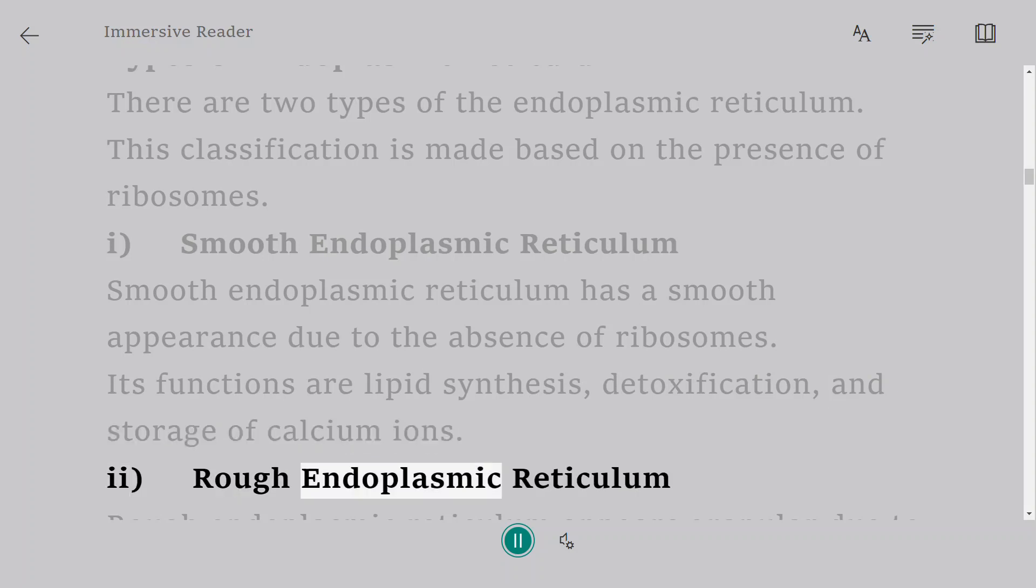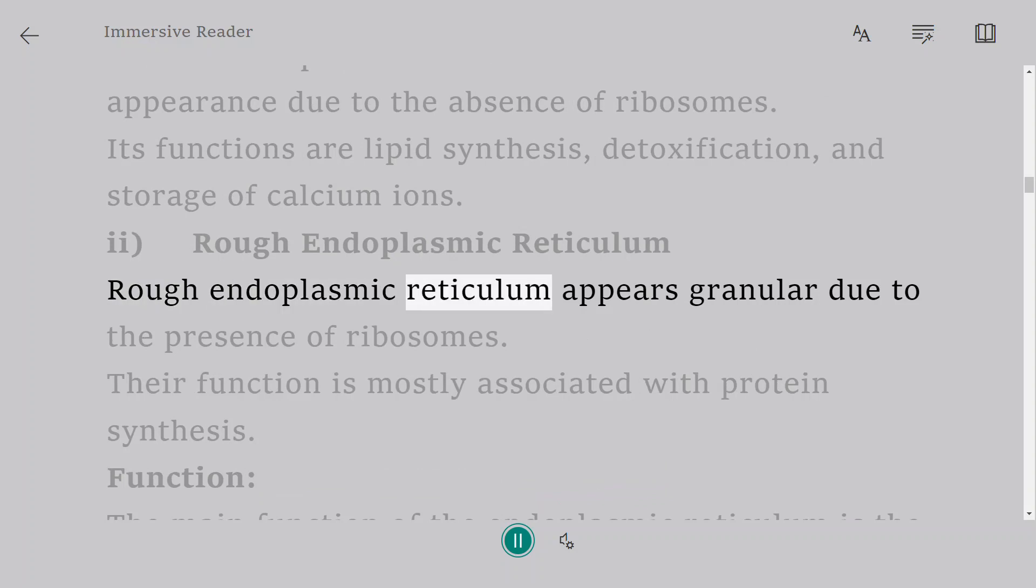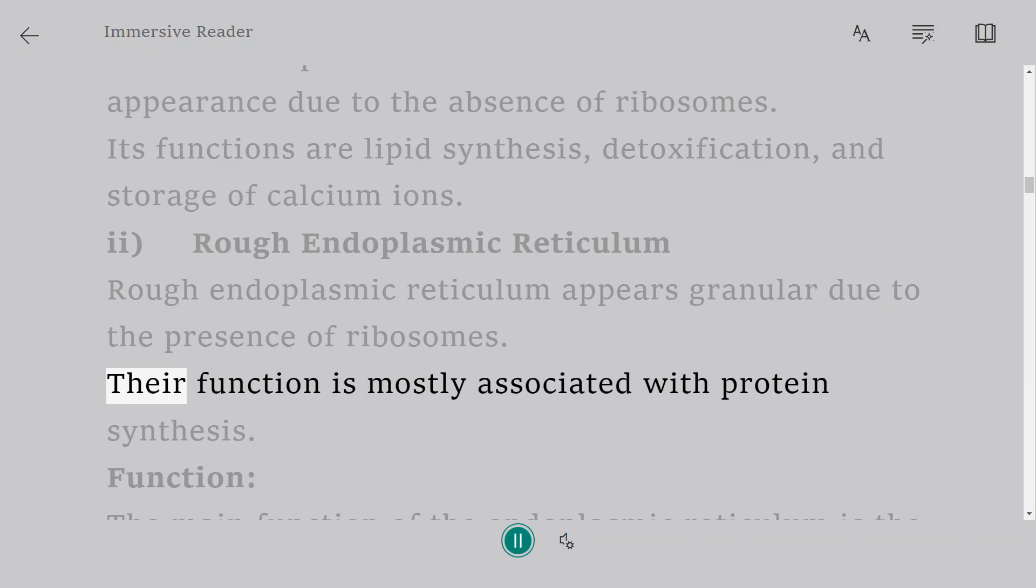2. Rough endoplasmic reticulum. Rough endoplasmic reticulum appears granular due to the presence of ribosomes. Their function is mostly associated with protein synthesis.